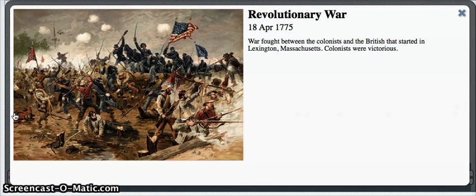The Revolutionary War started in April 1775. It was a war fought between the colonists and the British. The colonists were fighting for independence, and the British were fighting for the land.